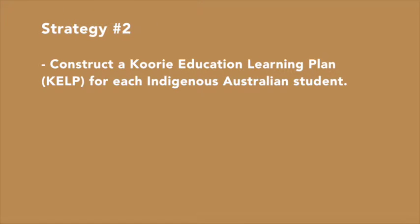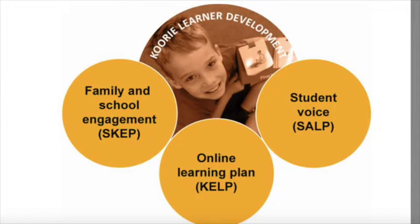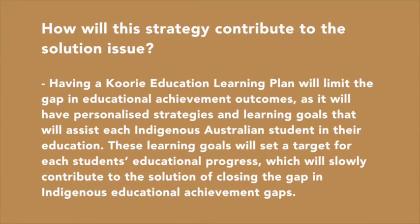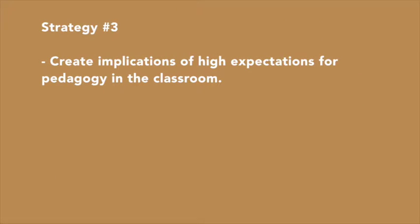The second strategy I have adopted is to construct a Koori Education Learning Plan, also known as a KELP, for each Indigenous Australian student. The KELP precisely states that the learner is at the centre, supported by family and school engagement, the online learning plan and the student voice. This plan is designed to assist Indigenous Australian students and their families and enables me as a teacher to construct further strategies for optimal engagement and participation. Having a KELP will limit the gap in educational achievement outcomes as it will have personalised strategies and learning goals that will assist each student, setting a target for each student's educational progress to contribute to closing the gap.